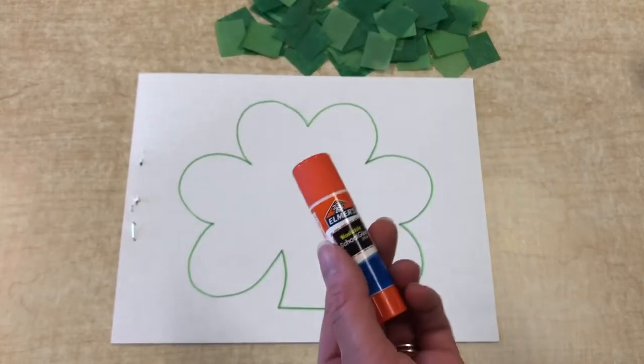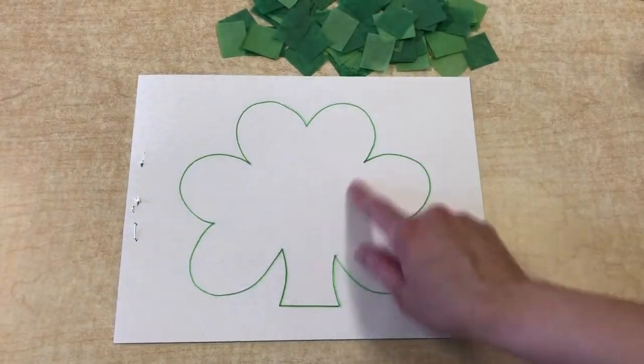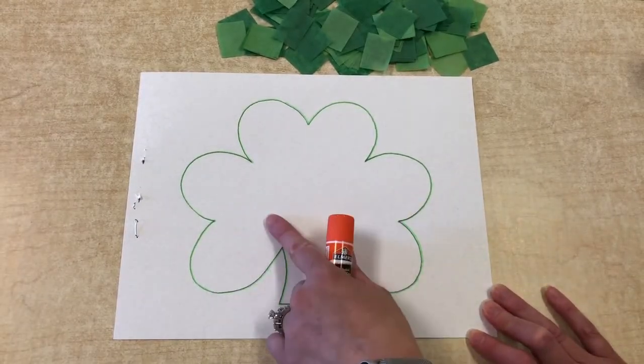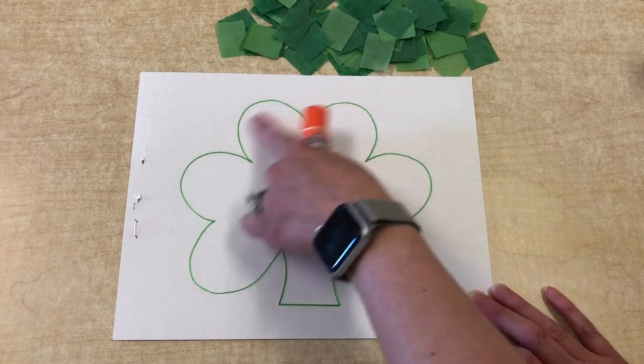We are going to take a glue stick and we're going to put it on the shamrock. Vamos a agarrar un pegamento de barra y lo vamos a poner en el shamrock o en el trebol en toda esta parte de aquí.